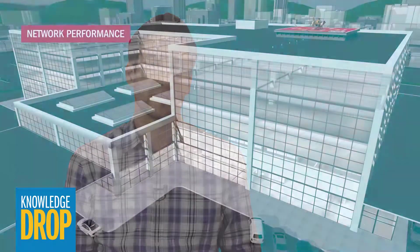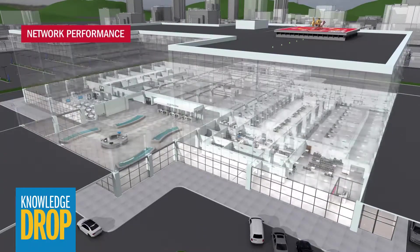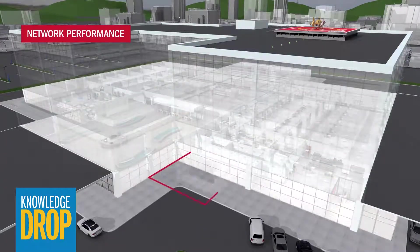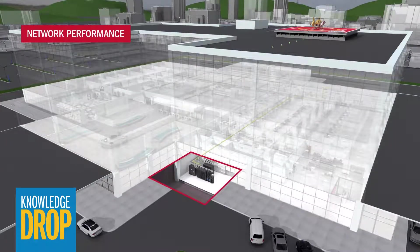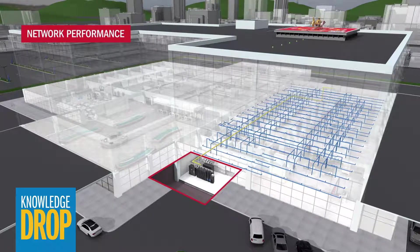So, how do you design a physical layer that provides reliable network connectivity for multiple applications, now as well as in the future, and ensures continuous connectivity in the workplace?